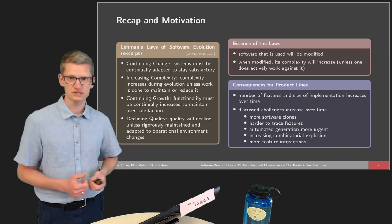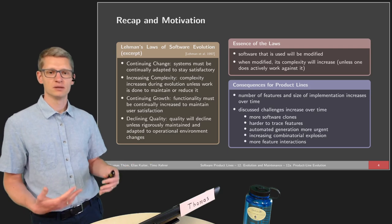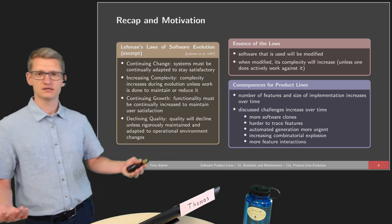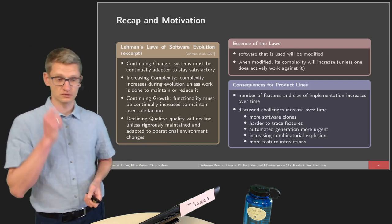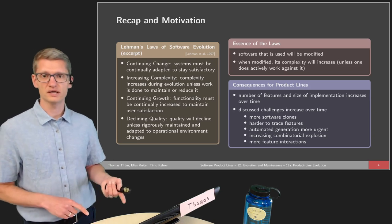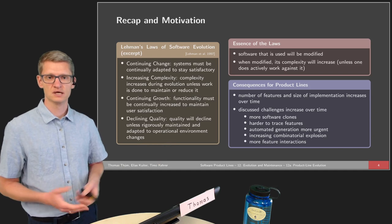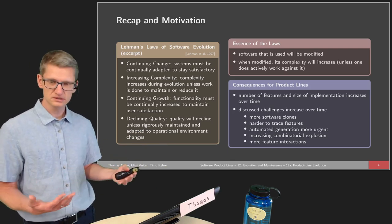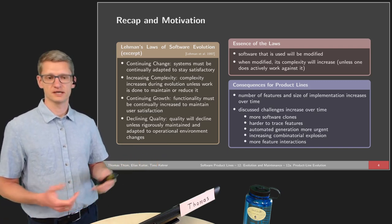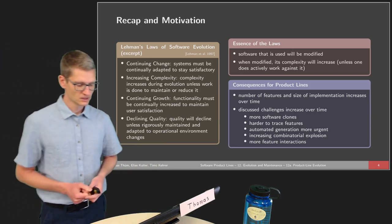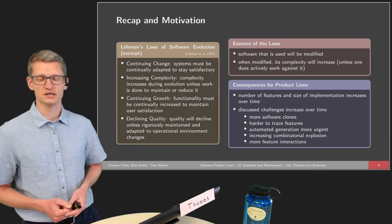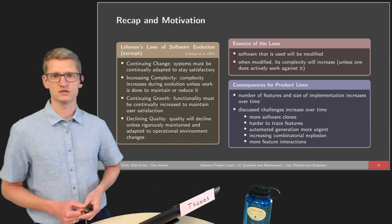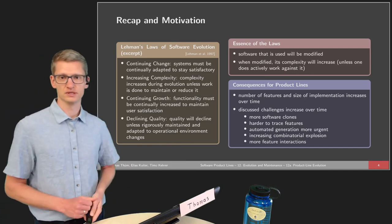We talked about certain challenges we see with product lines, and all these challenges are actually much more problematic. For instance, with software clones, the more clone-and-own projects we have, the larger the maintenance problems later on, and the harder it is to merge new features or trace feature artifacts. The payoff of a product line is increased with automated generation, allowing more complex product lines and more products. We do have all the problems inherent to the combinatorial explosion: more features mean more products, more configurations, and more feature interactions.